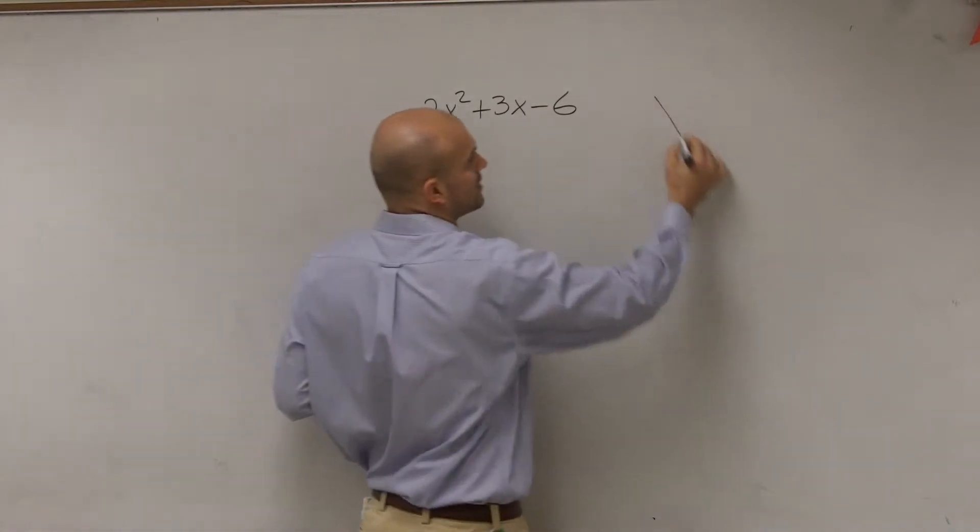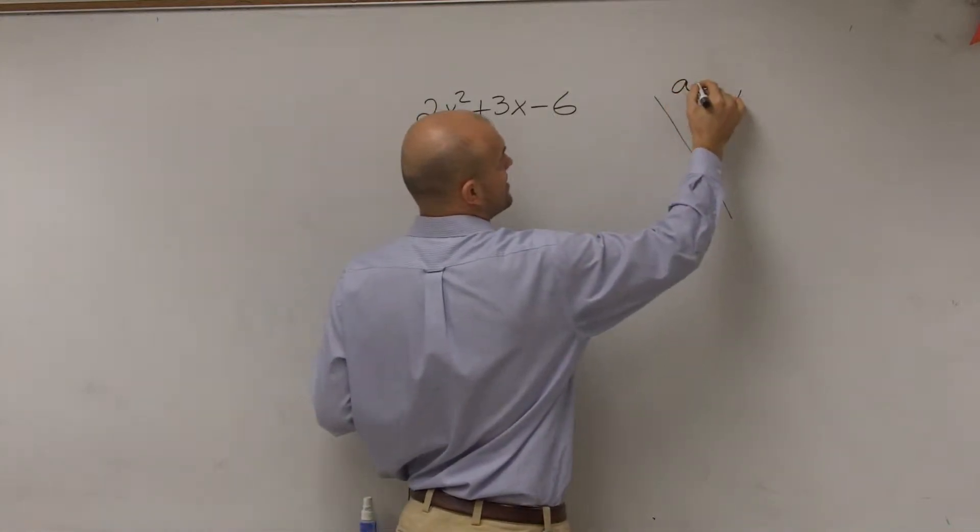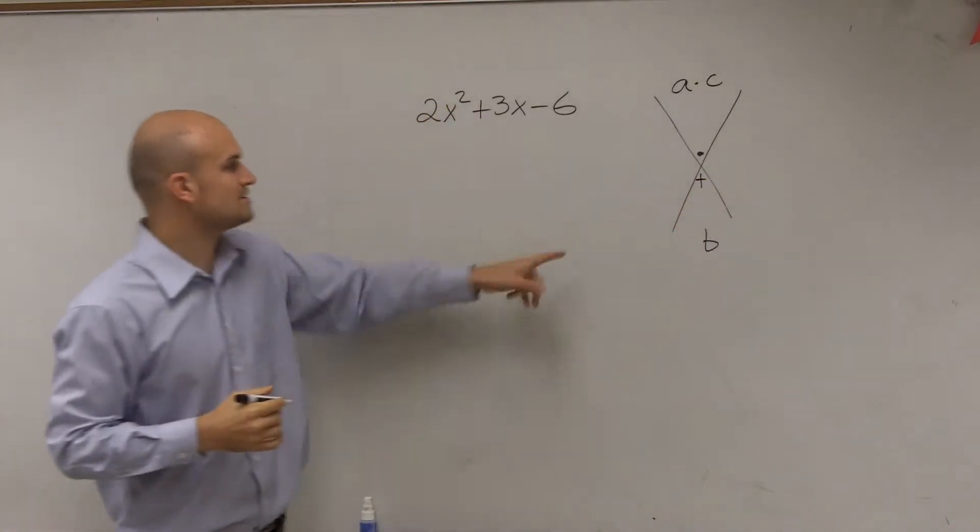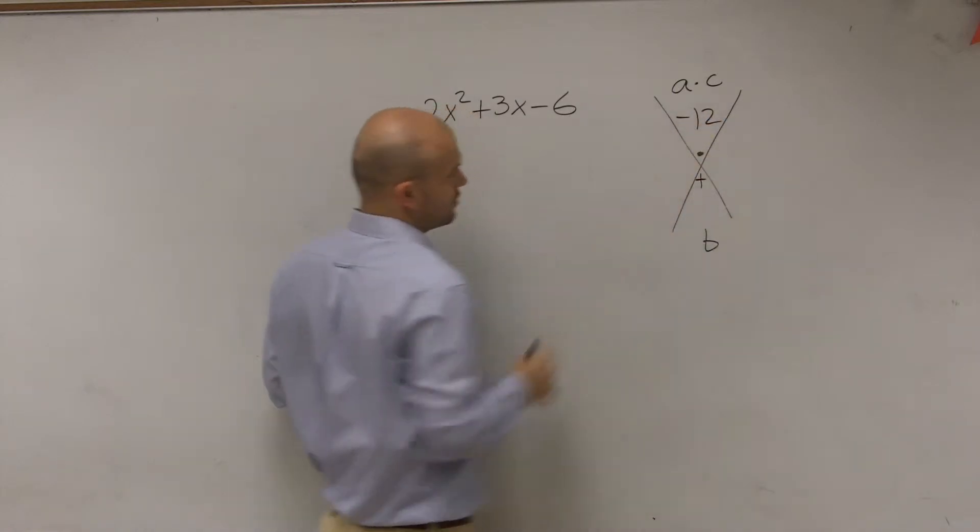So what we do is we create our kind of thing here to help us solve this, which we can do A times C and then B. And we're going to want to find out which two numbers multiply to give us our A times C. So A times C is 2 times negative 6, which is negative 12.